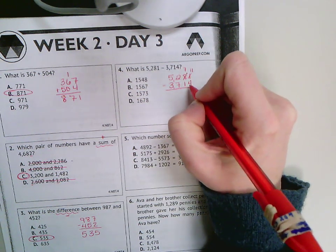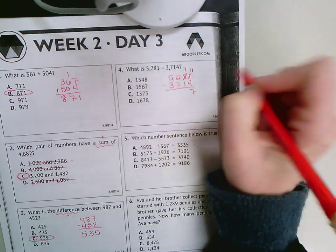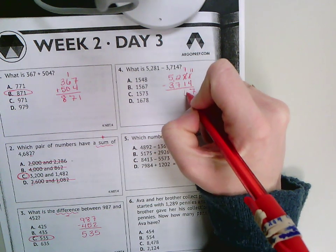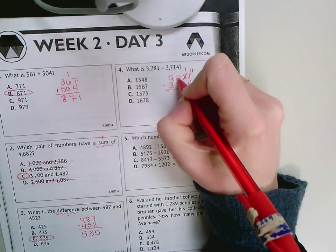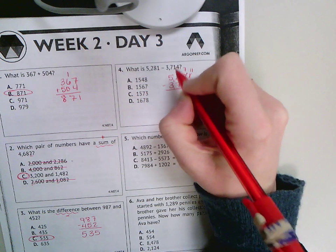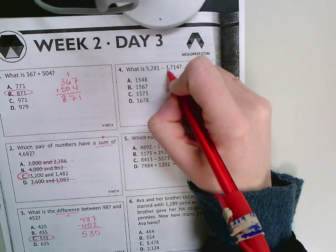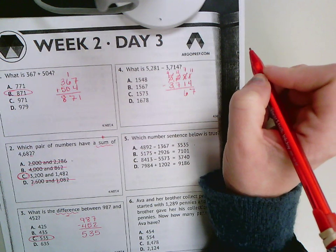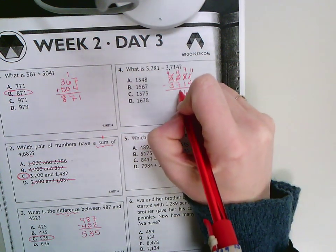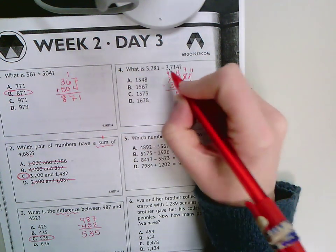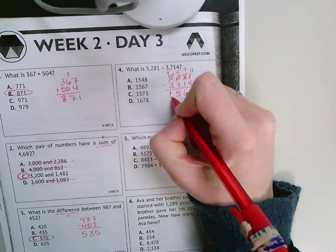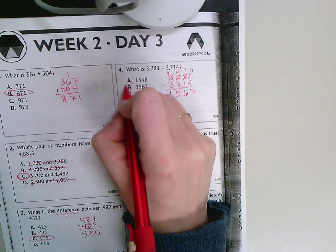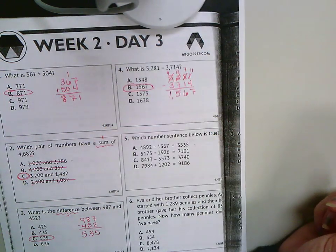11 minus 4 is 7. 7 minus 1 is 6. I can't take away 7 from 2 so I need to borrow again. So the 5 becomes a 4, the 2 becomes a 12. 12 minus 7 is 5, and 4 minus 3 is 1. So I get 1,567 which matches letter B.